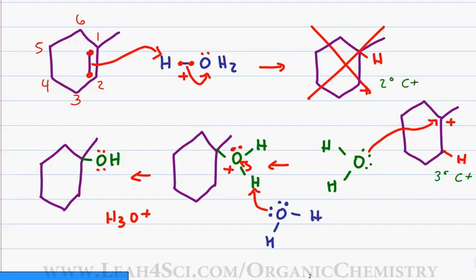This placement of the alcohol in the tertiary position is in accordance with Markovnikov's rule which tells you to place the carbocation intermediate in the most stable position.